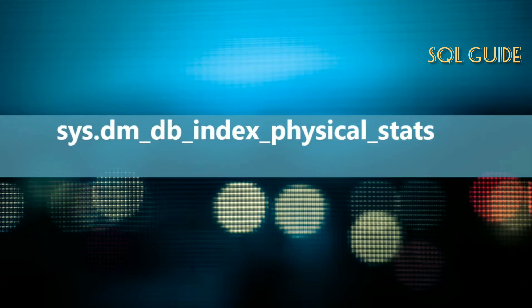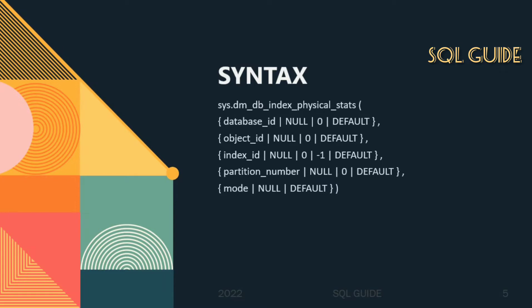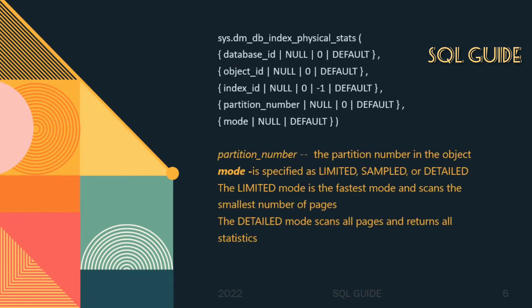The sys.dm_db_index_physical_stats dynamic management function will help you get fragmentation details of all indexes of a table. The syntax takes parameters: database_id, object_id (table or view ID), index_id, partition_number, and mode. The mode can be specified as limited, sampled, or detail. Limited is very fast and scans the smallest number of pages; detail mode scans all pages and returns all status information.